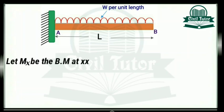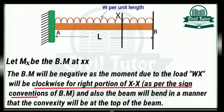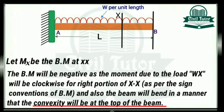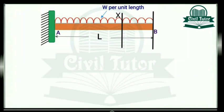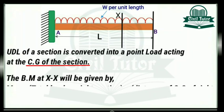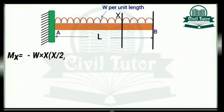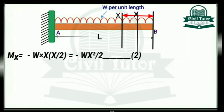Now let MX be the bending moment at section XX. The bending moment will be negative as the moment due to this load WX will be clockwise for the right portion of section XX, as per the sign conventions of bending moment. Also, the beam will bend in a manner that the convexity will be at the top of the beam. It should be noted that the UDL of a section is converted into a point load acting at the center of gravity of this section. The bending moment at section XX will be given by MX equal to minus times total load on right portion into distance of center of gravity of right portion from X. So MX will be equal to minus W into X into X by 2, which gives us minus WX squared divided by 2 — let's mark this as equation 2.